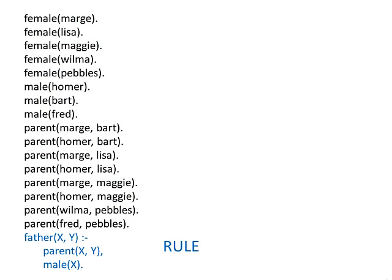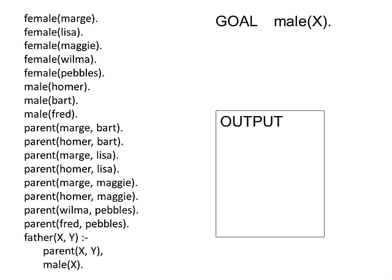The database also includes a rule which defines a father. So what happens when our goal is to find all of the males? Prolog begins by searching for the predicate male. It starts at the top of the database, and when it finds a successful match, the variable X can be instantiated, in this case, to Homer, and the value Homer can be output.